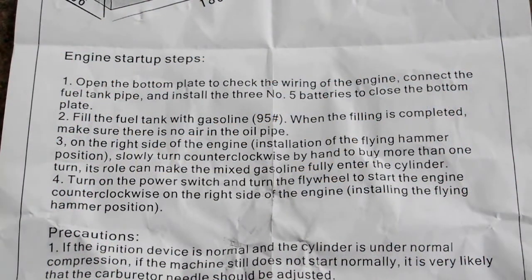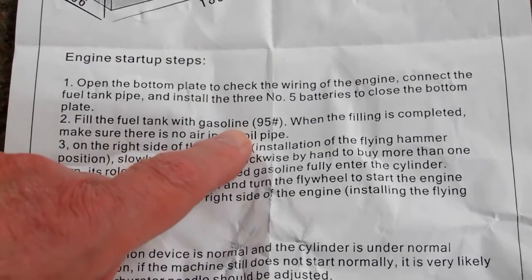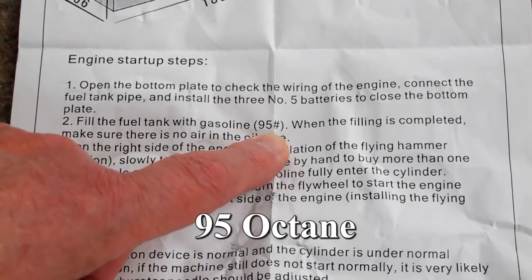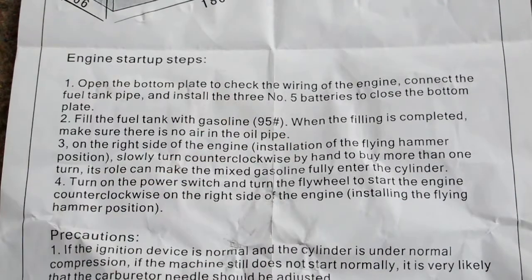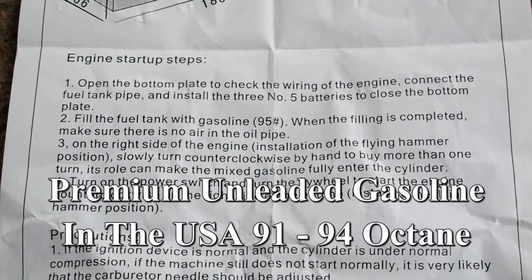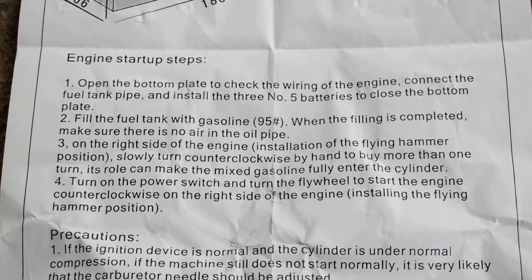The information sheet that comes with the engine, at least the one that came with my engine, shows to use gasoline 95, which I can only assume is 95 octane. Premium unleaded gasoline or petrol here in the United States is somewhere around 91 to 94 octane. I understand that 95 octane is standard in Europe.